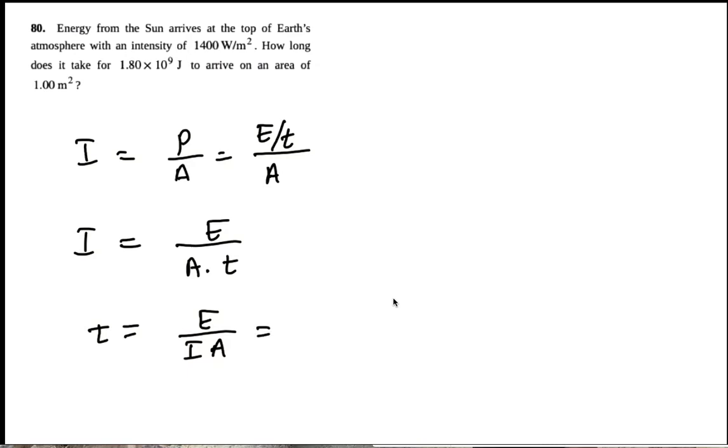What we want is 1.8 times 10 to the 9 joules to arrive. Intensity is 1400 watts, joules per second per meter squared, and we have it arriving in an area of 1 meter squared.